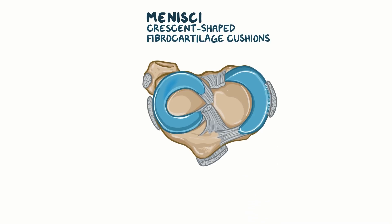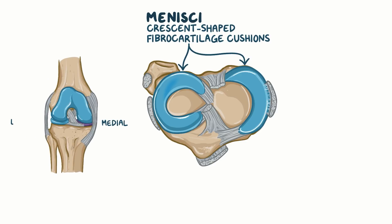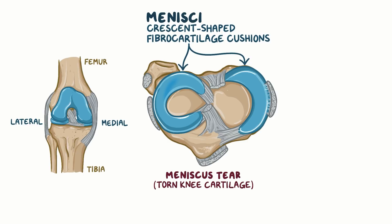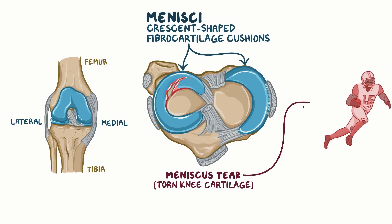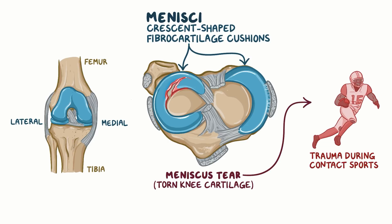The menisci are crescent-shaped fiber cartilage cushions found in the knee joint. Normally, there is the medial and lateral menisci between the femur and tibia. A meniscus tear, more commonly known as a torn knee cartilage, is when one of the menisci of the knee is torn. This usually occurs during a trauma during contact sports.